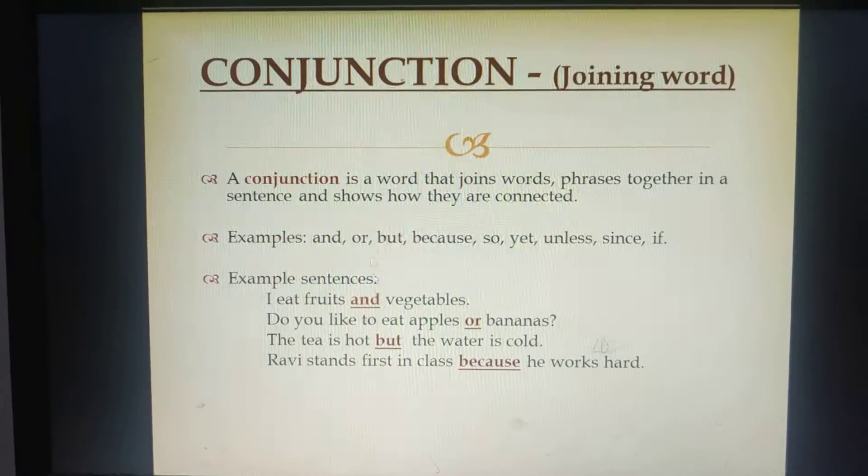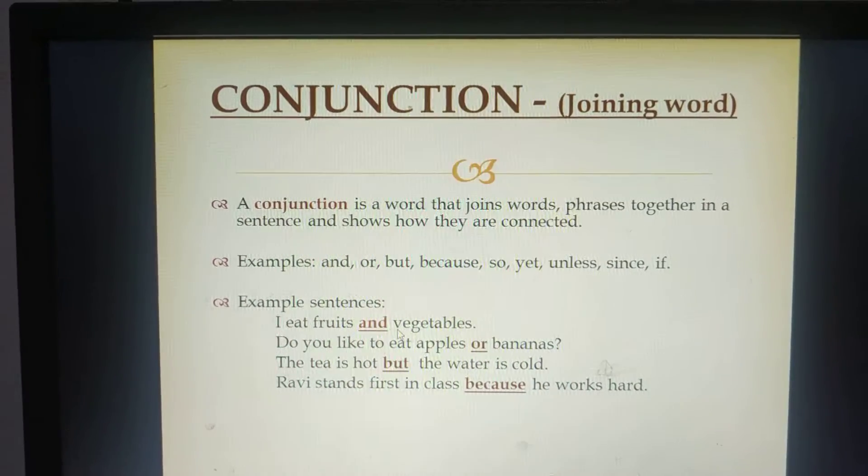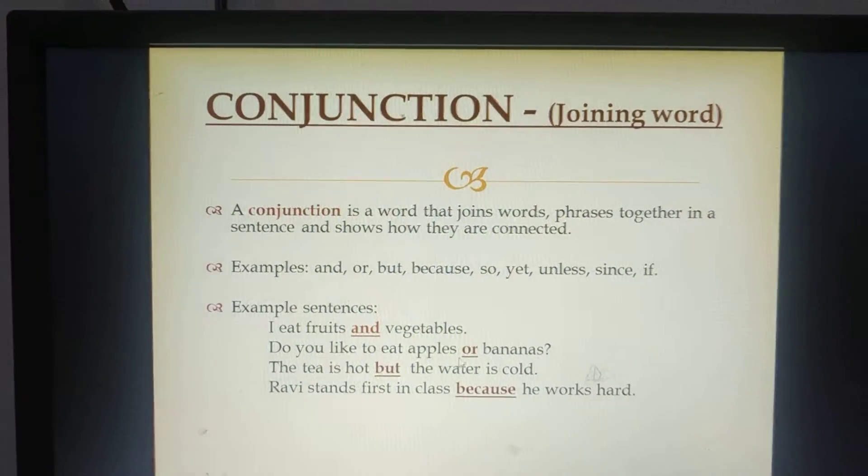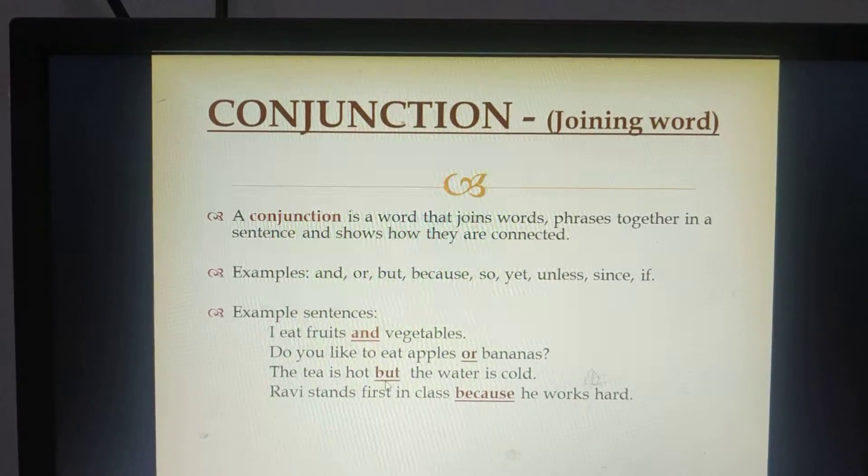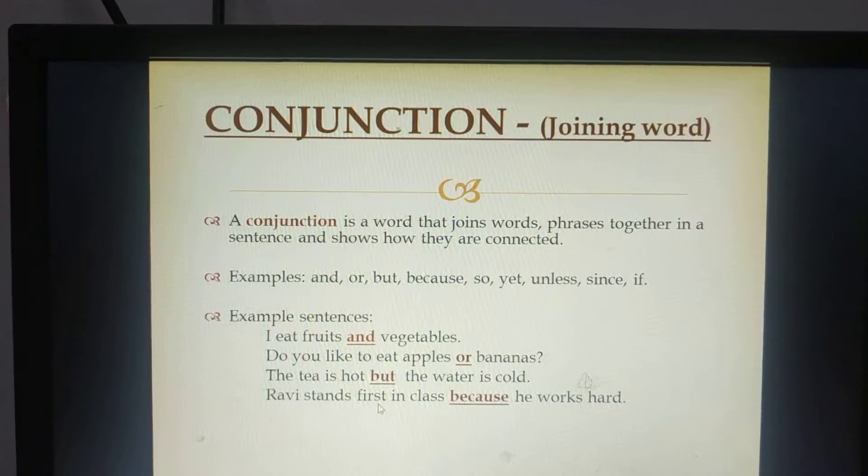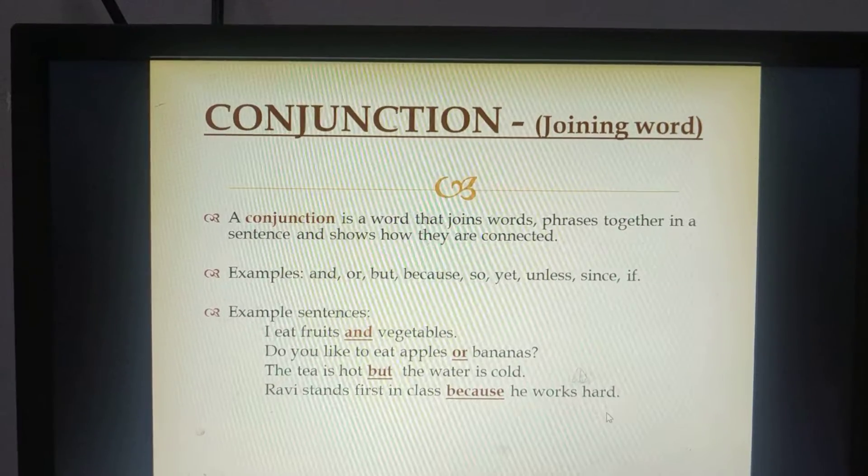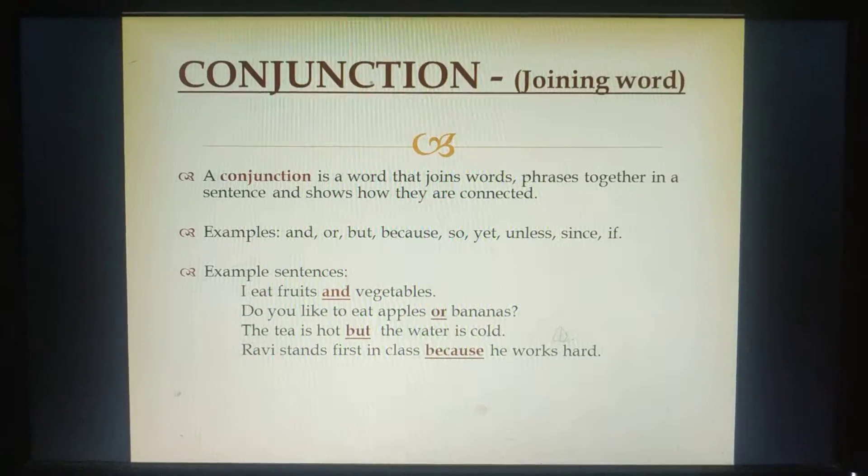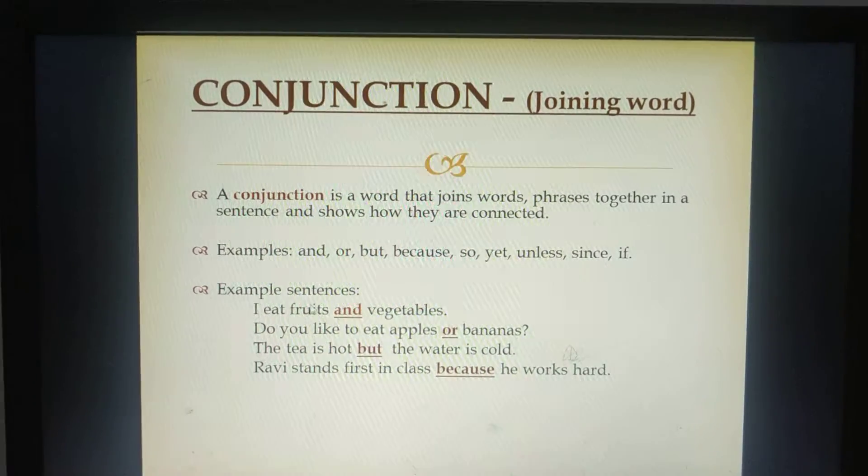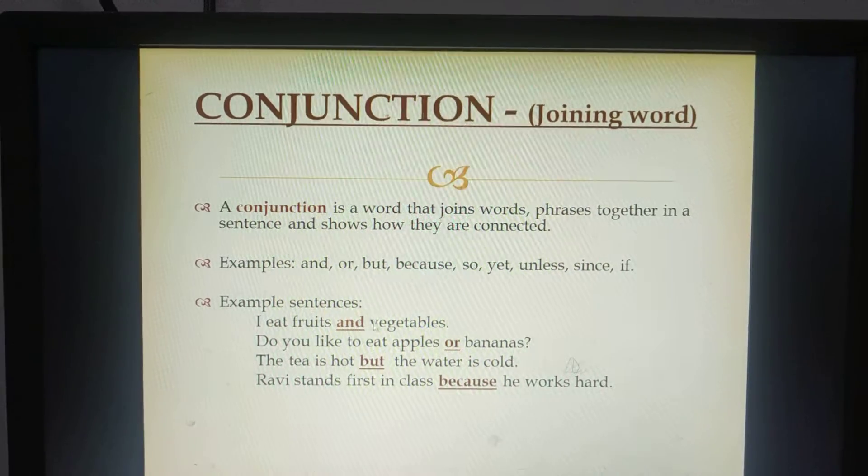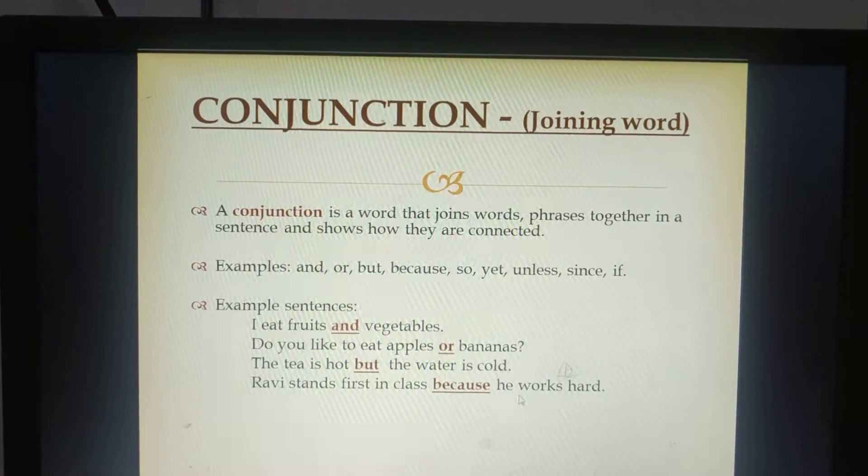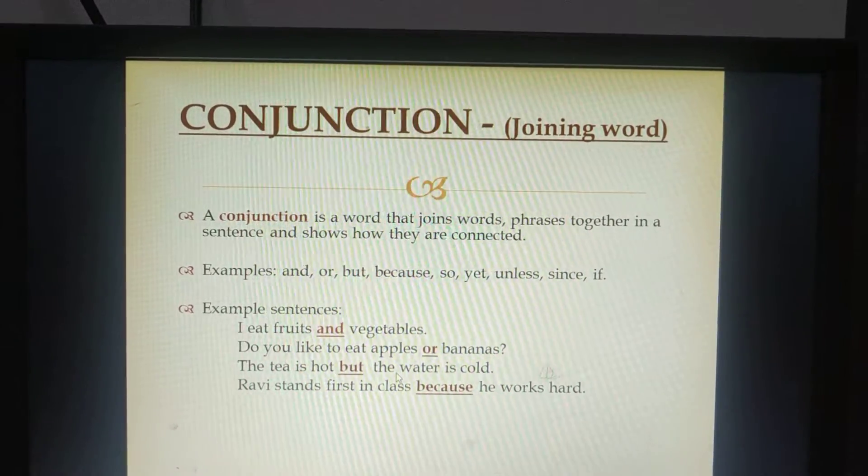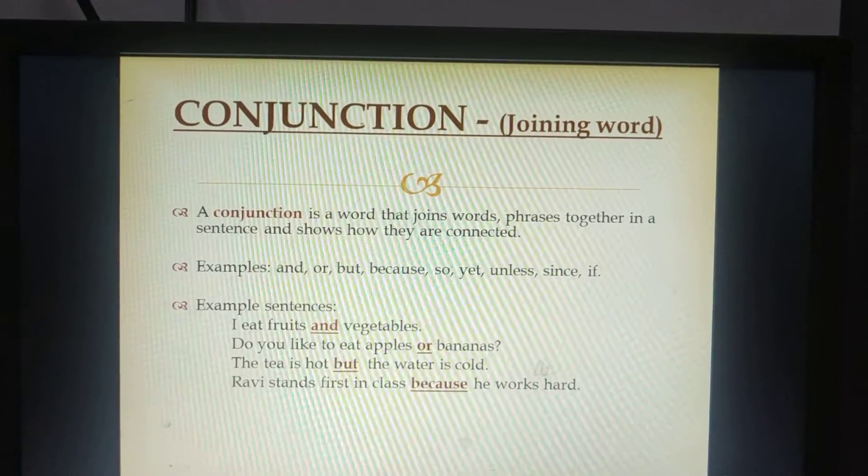Let's see how these examples are used in framing or joining sentences. I ate fruits and vegetables. Do you like to eat apples or bananas? The tea is hot, but the water is cold. Ravi stands first in class because he works hard. The underlined words like and, or, but, because are examples of conjunctions because these words join the words or two different sentences together. Conjunctions are the joining words that join sentences together.